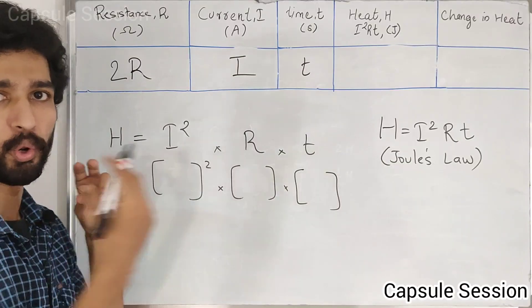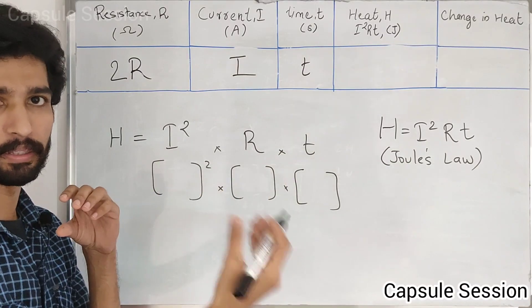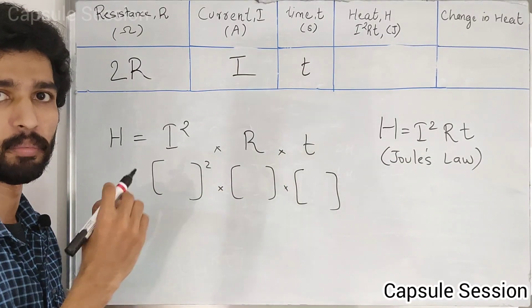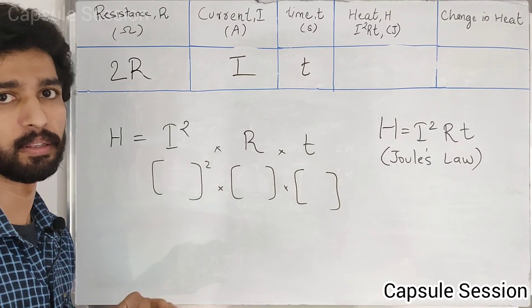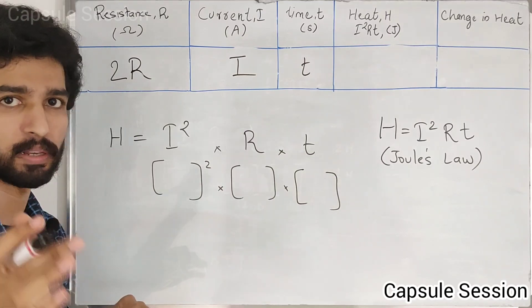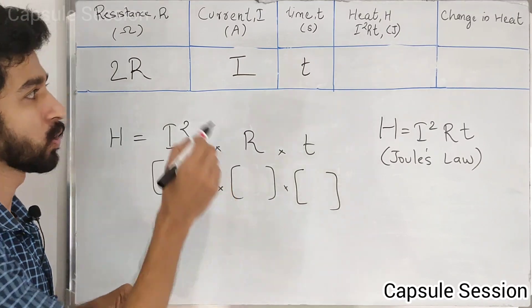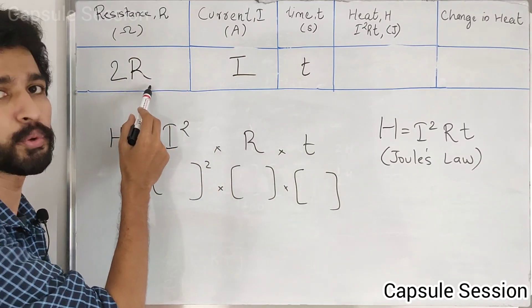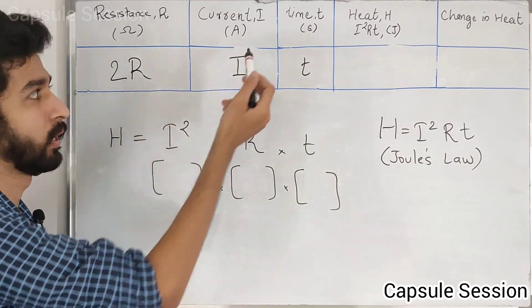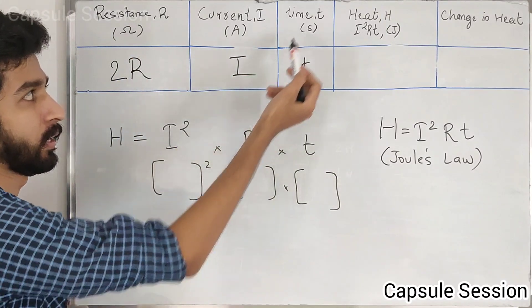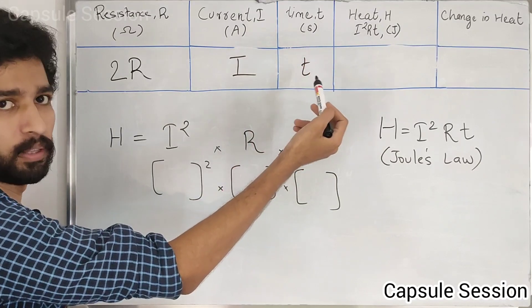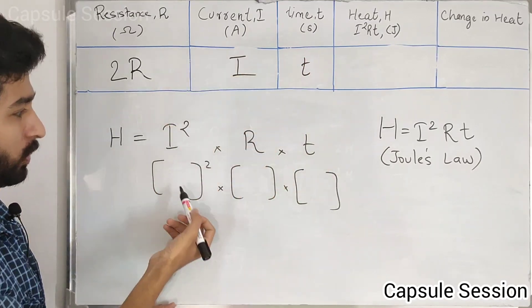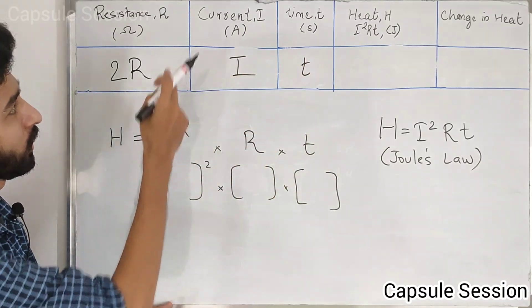Now, we are going to separate the text. If you are going to read the exam, you will be able to read the content of the exam. In the first case, the value of resistance is 2R, the value of current is I, and the value of time is T. Let's think about it. So, I will add the values that I have to answer.